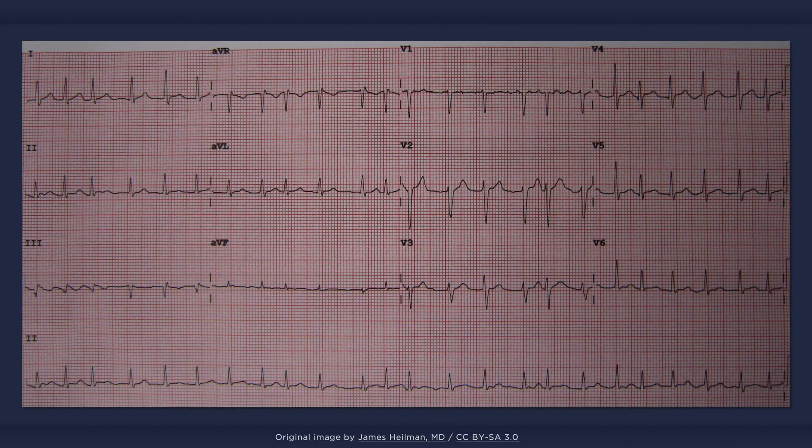The rate of the atrial fibrillatory waves can be extremely high — over 700 per minute. Thankfully, not all of these impulses are conducted to the ventricles. Nonetheless, a very fast heart rate can result when even a third of these impulses result in ventricular depolarization.